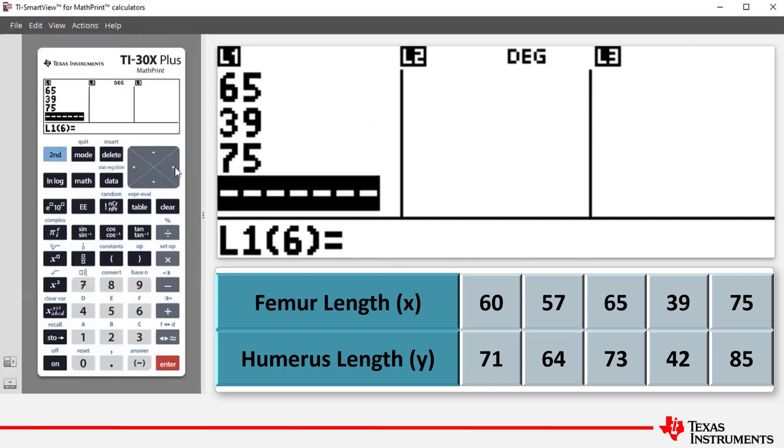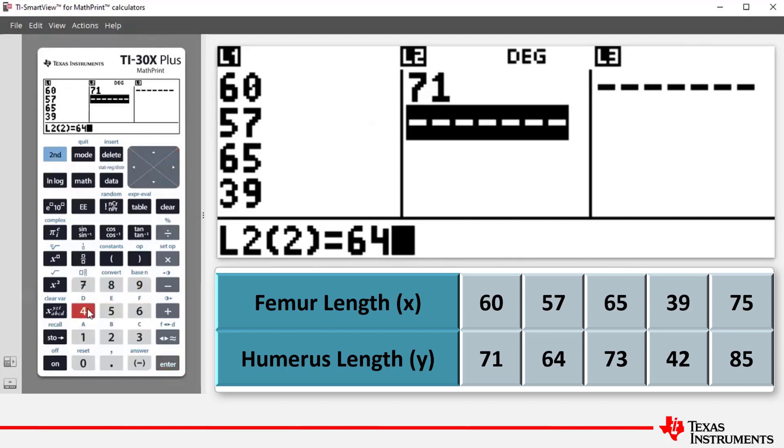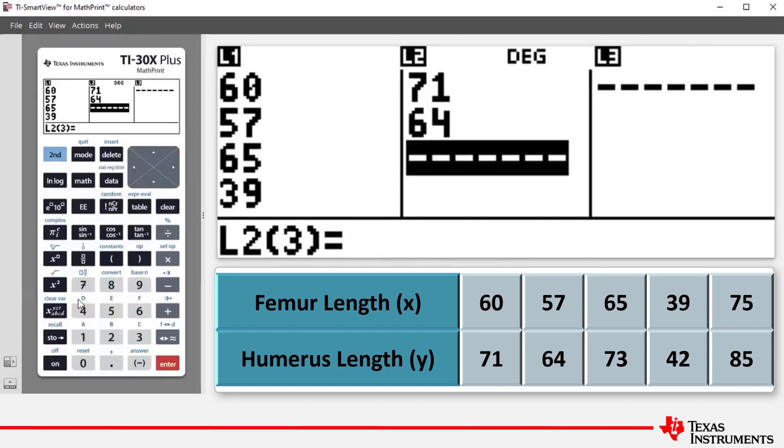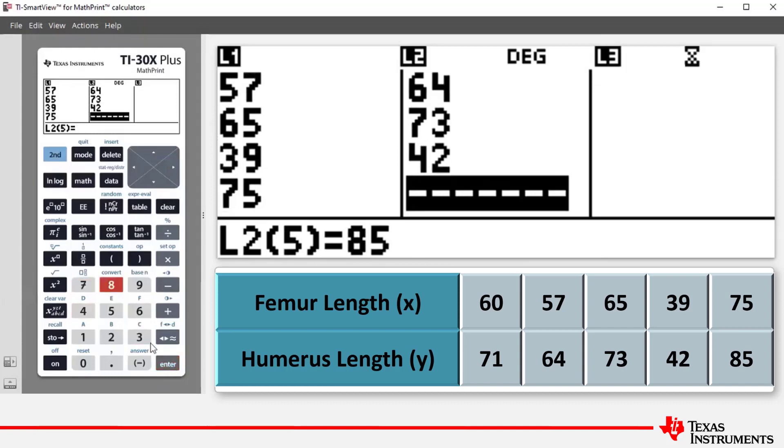We now press arrow to the right, takes us to the top of L2, where we can enter the humerus lengths. So we will do that now. 71, 64, 73, 42 and 85.